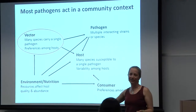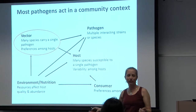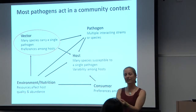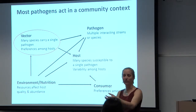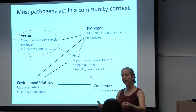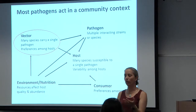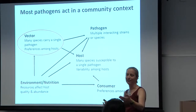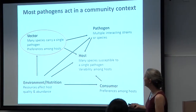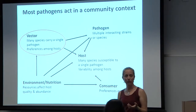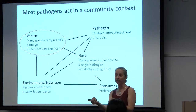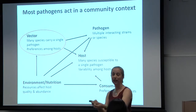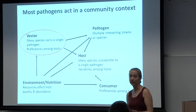Then we've got the vector. Sometimes it's not just one vector — many vector species will carry the same pathogen, and sometimes a single vector species will carry multiple pathogens, with implications for infection or co-infection within a host. This is a much larger context than we often consider. Vectors can also have preferences among hosts; they may preferentially feed on an uninfected host, which has obvious implications for increasing infection in a population.